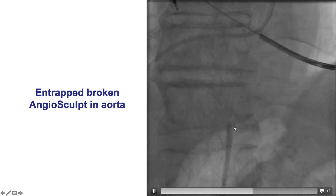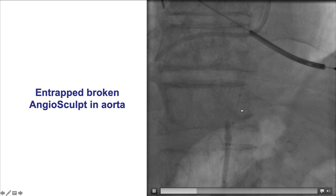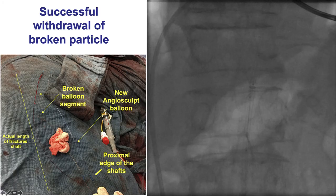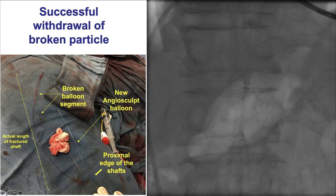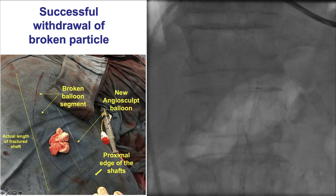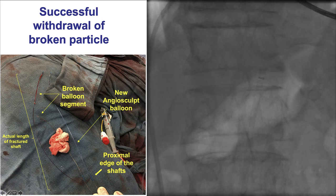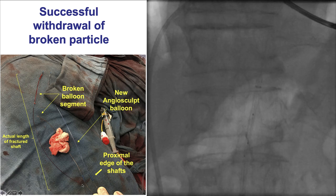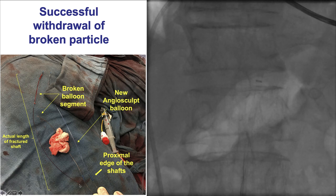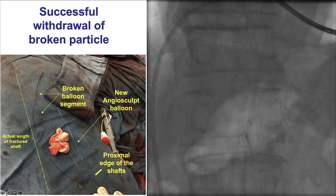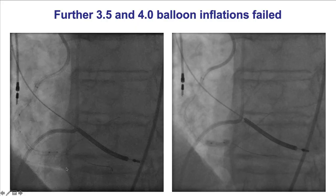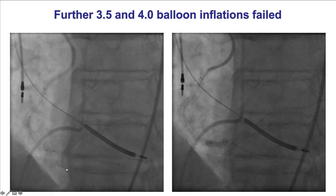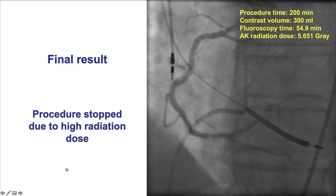It was a fairly lengthy segment of the angiosculpt balloon that was retrieved. The lesson here is that a kink likely occurred in the angiosculpt balloon before insertion, which then led to fracture. If there is any kink in the shaft of a balloon, it should be discarded and not inserted into the body. Eventually, additional balloon inflations were performed and the case was concluded.